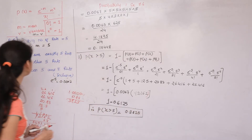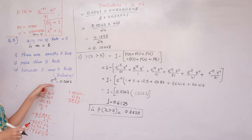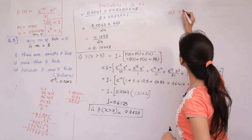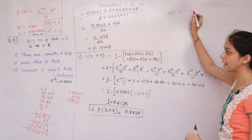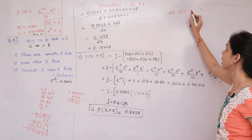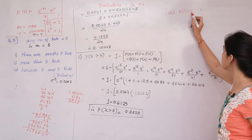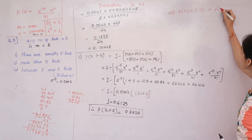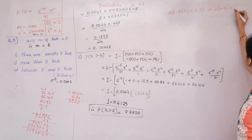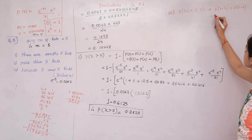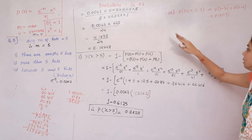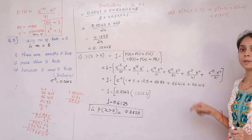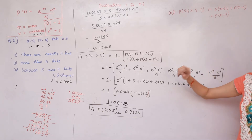That is our final answer for the second condition. Similarly, the third condition — P(5 ≤ X ≤ 7) — is left as homework. Question 5's third condition: P(between 5 and 7 reds inclusive) is to be solved similarly by finding each probability separately and adding them.